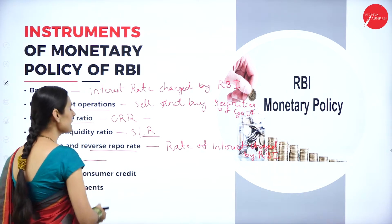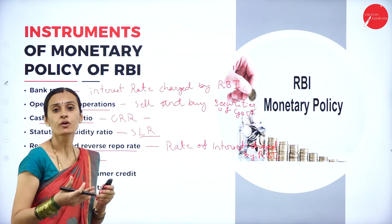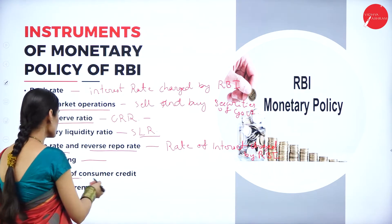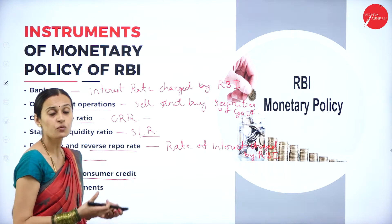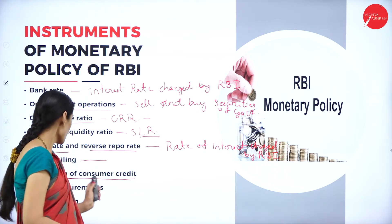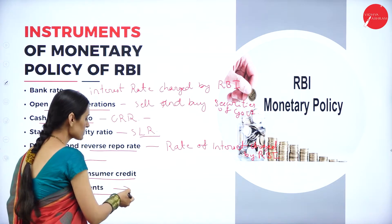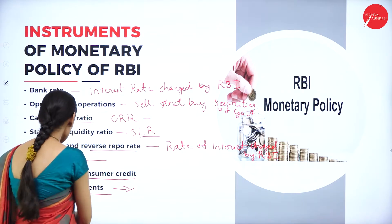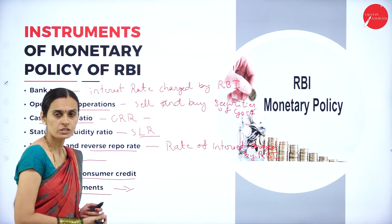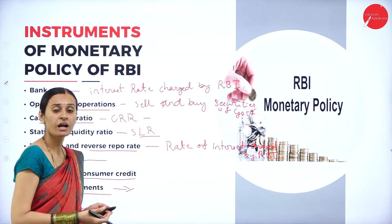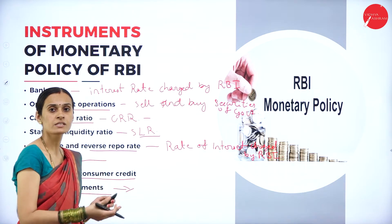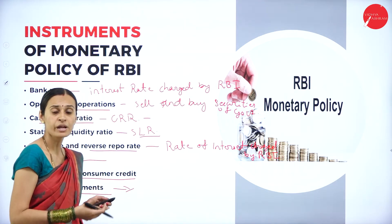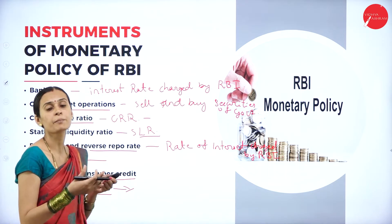Credit ceiling refers to instructions given by RBI for providing loans to the public by commercial banks. Regulations of consumer credit refers to the determination of the volume of credit by all commercial banks. Margin requirements are about loans granted by commercial banks against securities to the public. Under moral suasion, RBI gives techniques, different advice, and suggestions to the commercial banks to control the monetary system of the country.